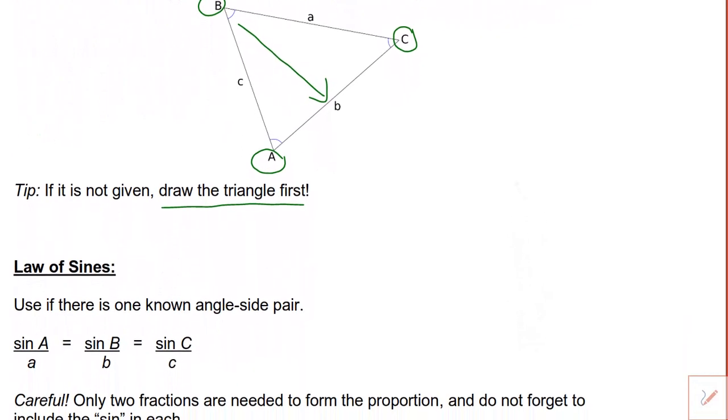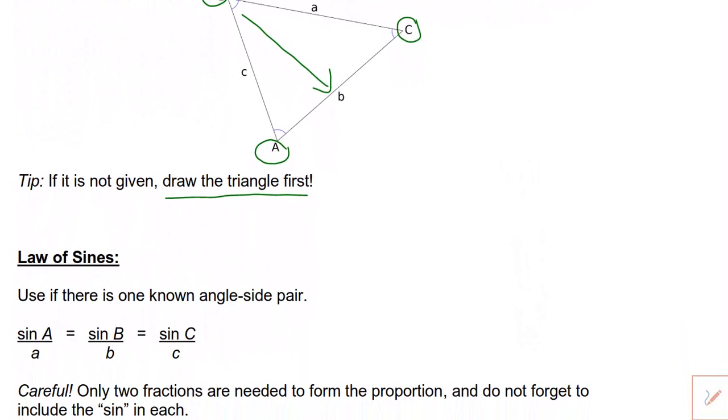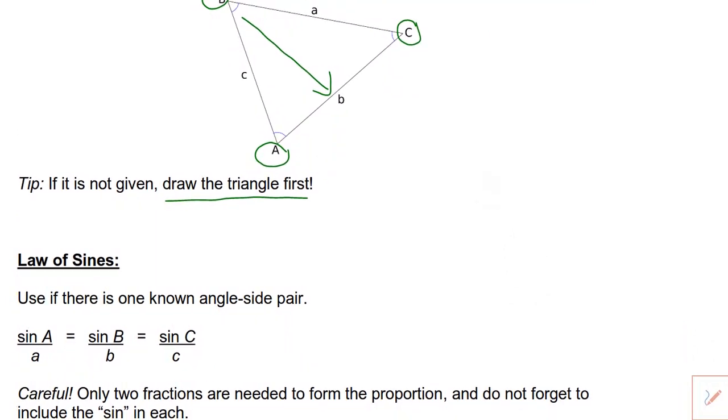Now that we understand that let's go through law of sines and law of cosines. I'm going to start with law of sines because it is the easier of the two. Law of sines is presented as sine of A over a equals sine of B over b equals sine of C over c.